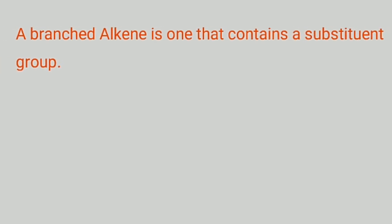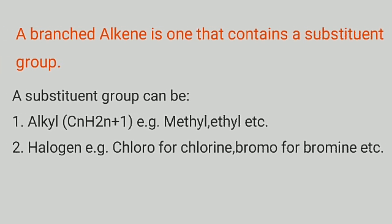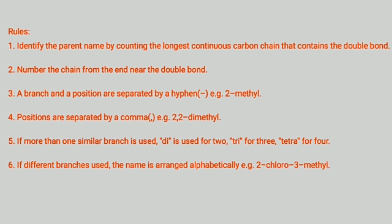Next is branched alkenes. A branched alkene is an alkene that contains a substituent group. We have two substituent groups: one is the alkyl group, CnH2n+1 — examples include methyl, ethyl, propyl, and so on — and the other is the halogen, such as chlorine, bromine, and so on. There are rules that guide the naming.